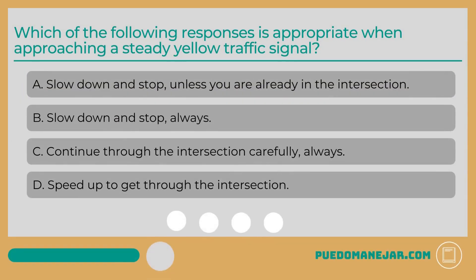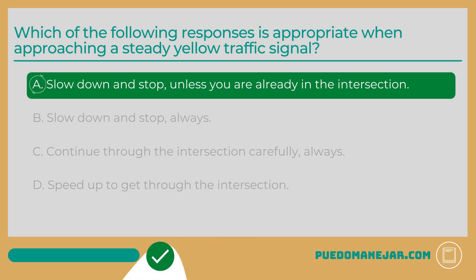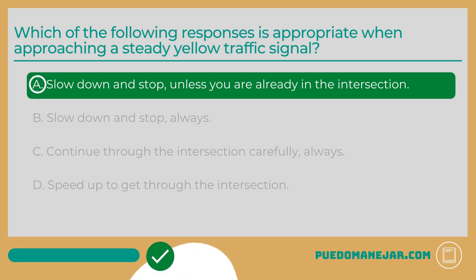Which of the following responses is appropriate when approaching a steady yellow traffic signal? A. Slow down and stop, unless you are already in the intersection. B. Slow down and stop, always. C. Continue through the intersection carefully, always. D. Speed up to get through the intersection. The answer is A. A yellow light means the light is about to turn red. You should slow down and stop if safe to do so. However, if you are already in or entering the intersection, proceed through carefully.